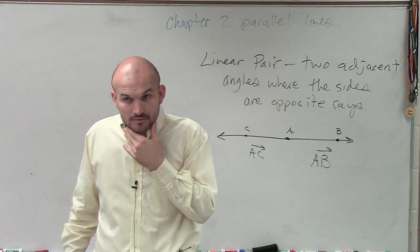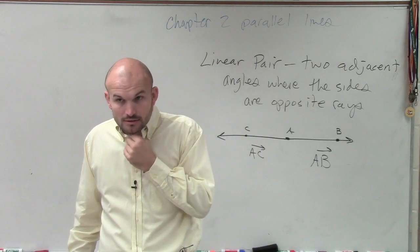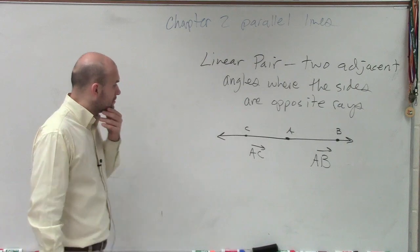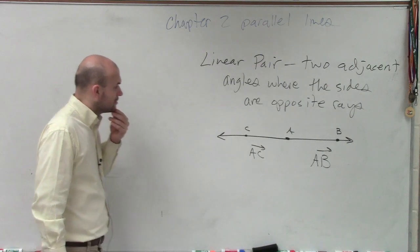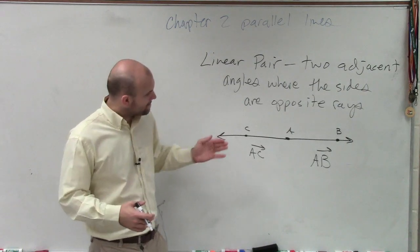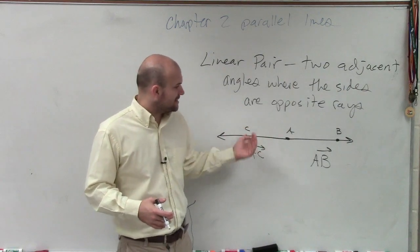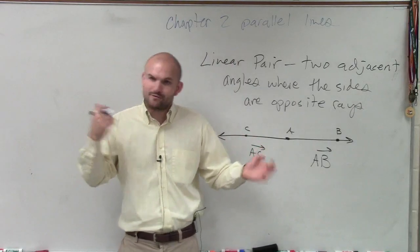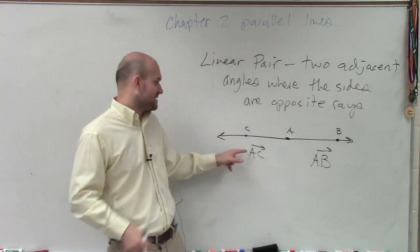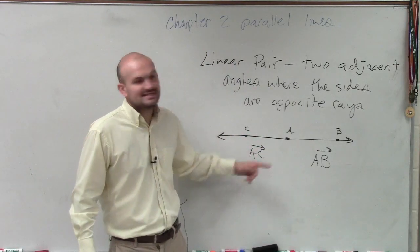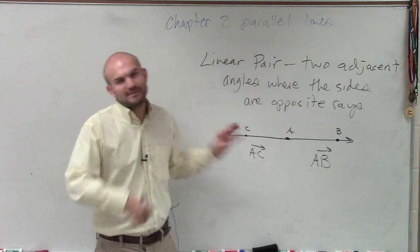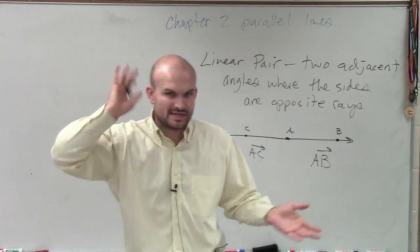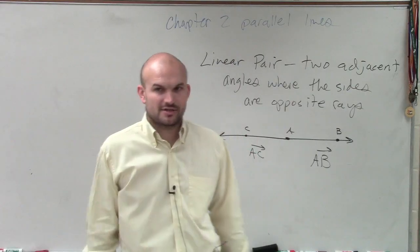Student: So they go in opposite directions? Teacher: Yes. AC is going to the left. You don't have to write the arrow going whatever way — you just need to say it's going from A to C. We just go from left to right; you don't need to specify the direction of the arrow.